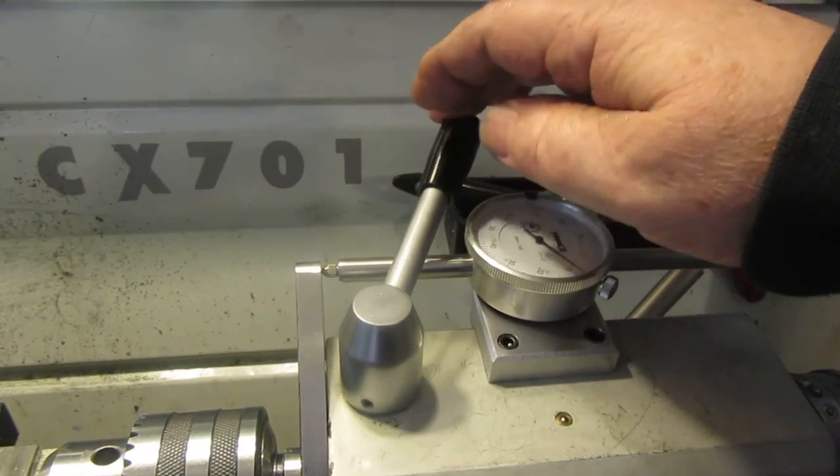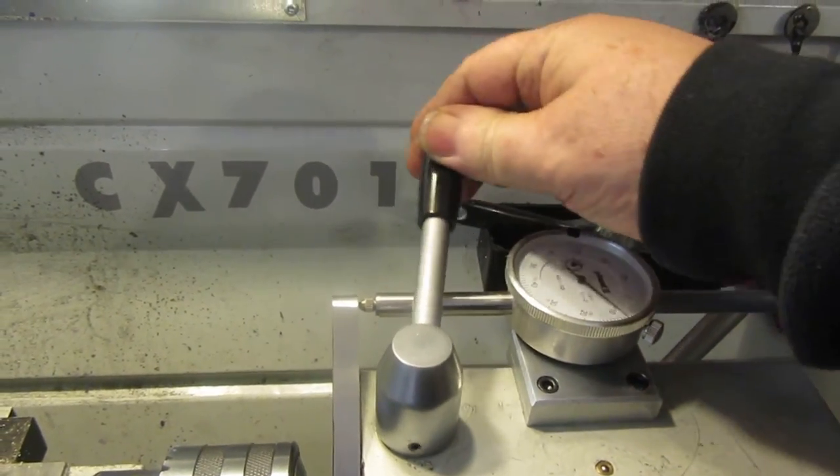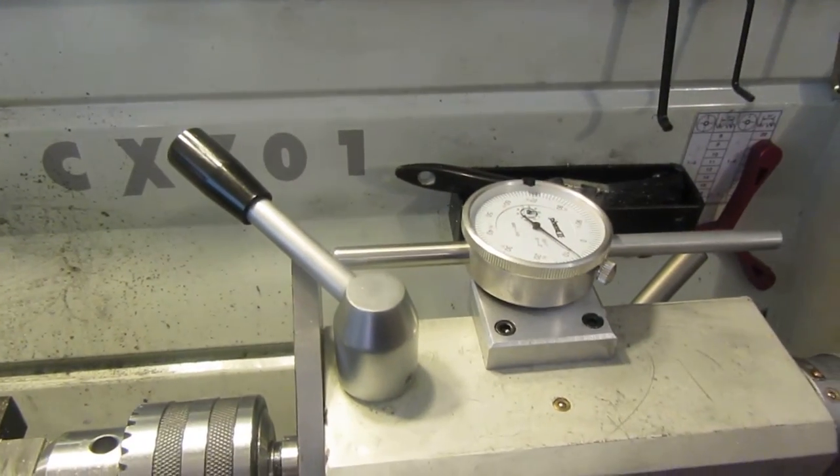As you can see, I can still lock the tailstock if I need to. It clears. Don't clear by much, but it does clear.